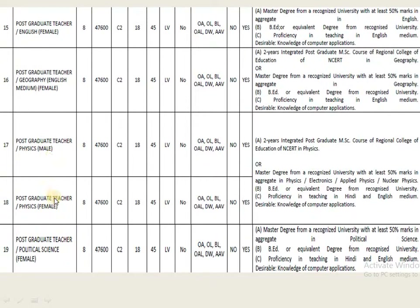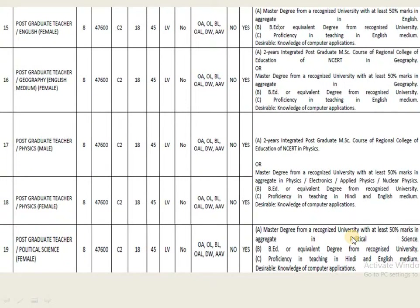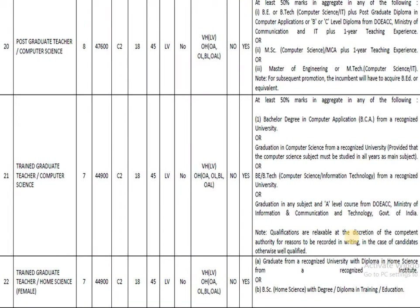Similarly, for Post Graduate Teacher in Political Science — female category — the pay band is 47,600. Candidates must have completed a Master's degree in Political Science along with BEd to be eligible to apply.